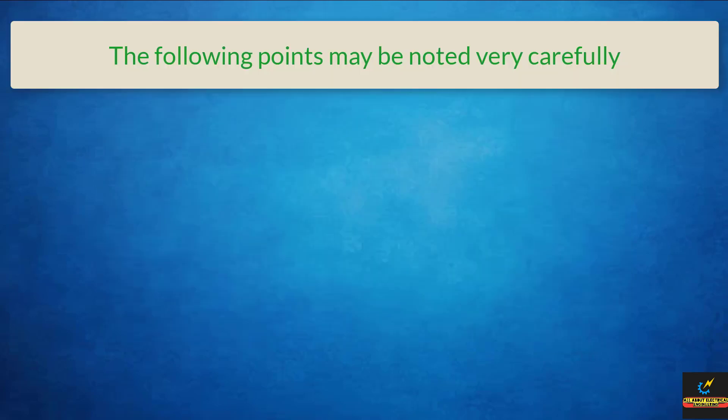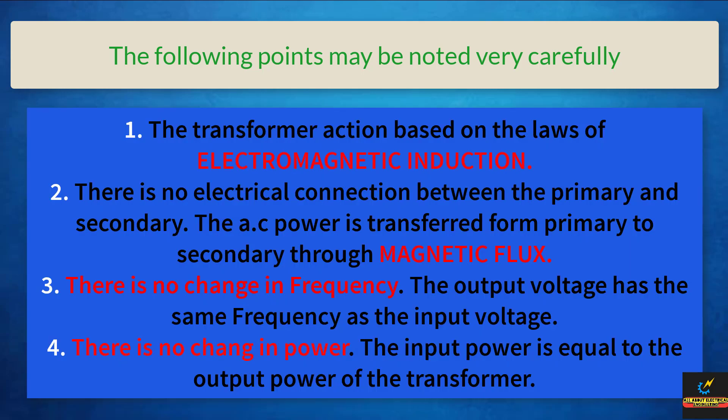Now the following points may be noted very carefully. First, the transformer action is based on the law of electromagnetic induction. Second, there is no electrical connection between the primary and secondary winding of the transformer. The AC power is transferred from primary to secondary through magnetic flux. Third, there is no change in frequency. That means the output voltage has the same frequency as the input voltage. Fourth, there is no change in power.